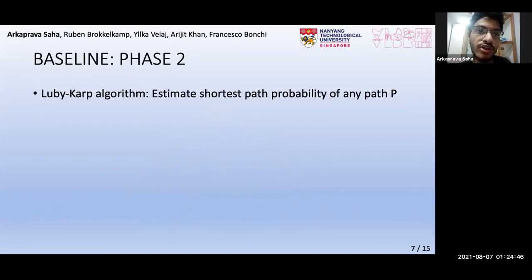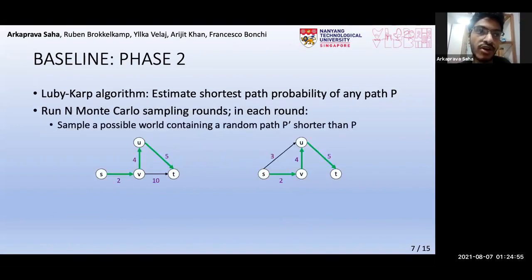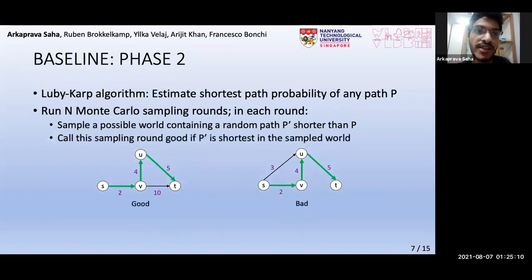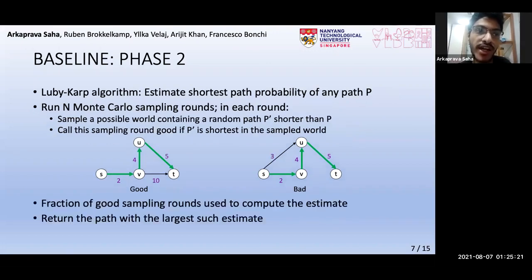Next, in phase 2, it uses the Luby-Karp algorithm to estimate the shortest path probabilities of the candidate paths. To do so, for every candidate P, it runs N rounds of Monte Carlo sampling. And in each round, it samples a possible world containing a random path P' shorter than P. For example, say P' is the green path. Now, if P' is the shortest path in that sampled world, as shown in the figure on the left, the sampling round is said to be good, and otherwise bad, as in the figure on the right. Now, the fraction of good sampling rounds out of N is used to compute the estimate. Finally, of course, the candidate path with the largest such estimate is returned.